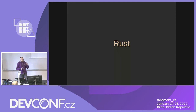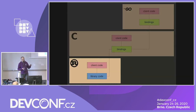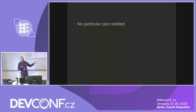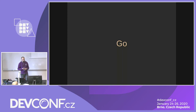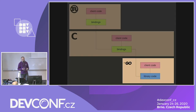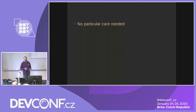Let's get into the various implementations, starting with the Rust implementation. This is our library code implemented in Rust — you just do what you'd expect, nothing particularly special is needed here. For the Go part, similarly the library code written in Go requires nothing special; you just write the interface you'd expect for a Go library.